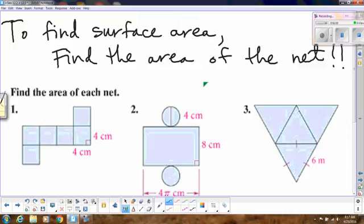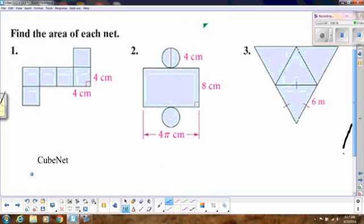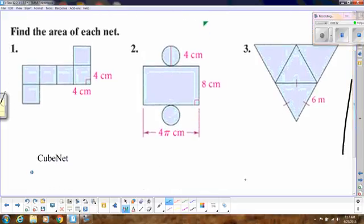In order to find the surface area of any shape, we really have to find the area of the net. And what we mean by the net is, if we were to unfold that shape into just a flat piece of paper, we would add up all of those shapes together. So if I were to find the area of this net, each of these squares are 4 by 4, so that means that each square is 16. And there is 1, 2, 3, 4, 5, 6. So I would do 6 times 16 in order to get the surface area. So that is always one way to look at it.